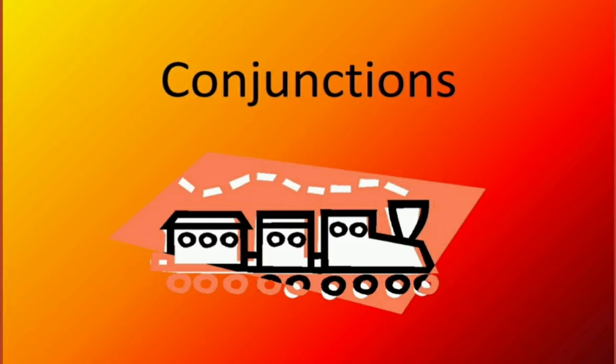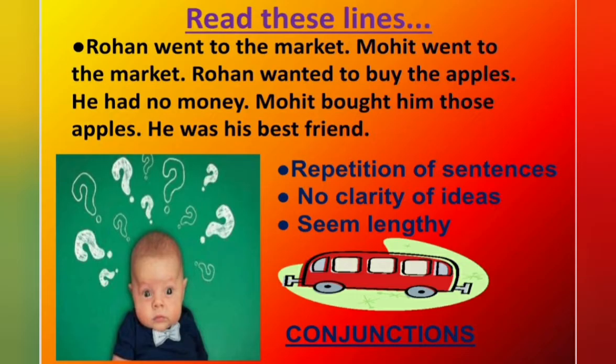Today we are going to study conjunctions. Before starting, let me read these lines. Rohan went to the market. Mohit went to the market. Rohan wanted to buy the apples. He had no money. Mohit bought him those apples. He was his best friend. Now, while reading these sentences, what did you observe? Yes, there is a repetition of sentences. There is no clarity of ideas and they seem lengthy also.